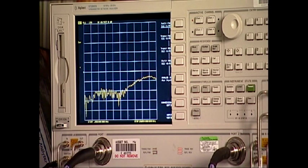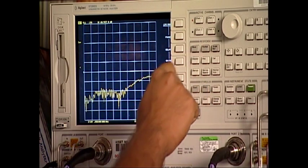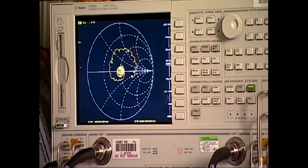We can also analyze these S parameters on other formats such as, for example, a Smith chart. For that, we'll have to select the format button and Smith chart. S11 is our return loss. We can adjust the scaling by setting a start and stop frequency as well. Say for example, we have to set a frequency range of 50 megahertz to 1 gigahertz.